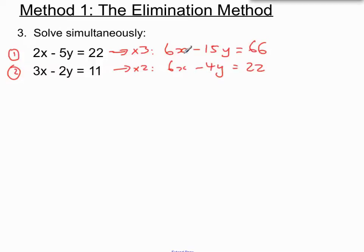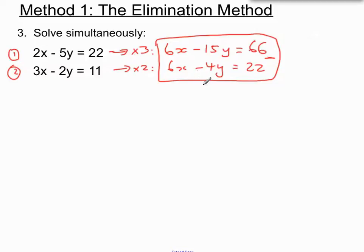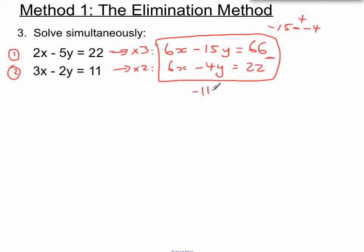Now we ask ourselves what we need to do between these two new equations to eliminate one of the letters. We're going to subtract between them because 6x minus 6x will eliminate the x's. We have to be really careful here: minus 15y minus a minus 4y — two minuses together become a plus — so minus 15 plus 4 is minus 11. So we have minus 11y.